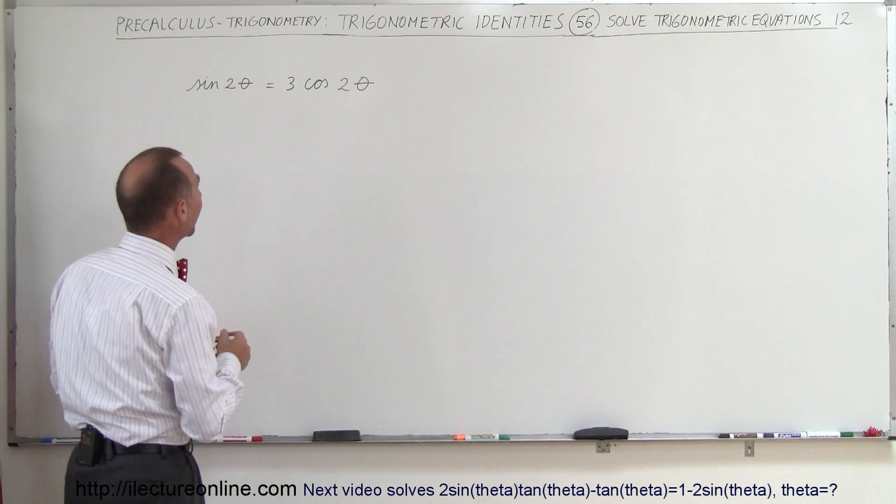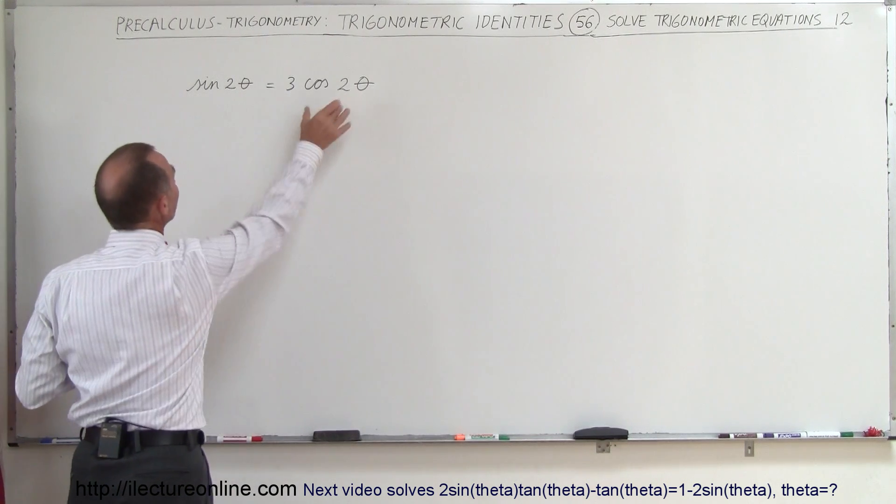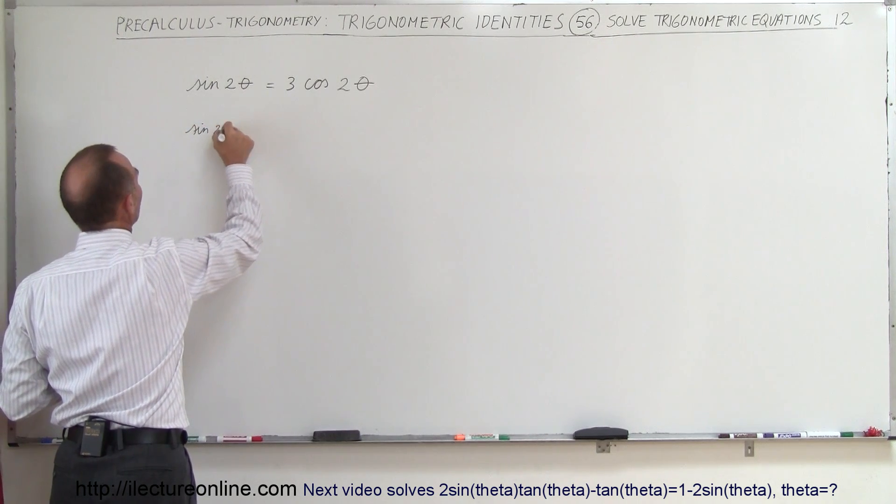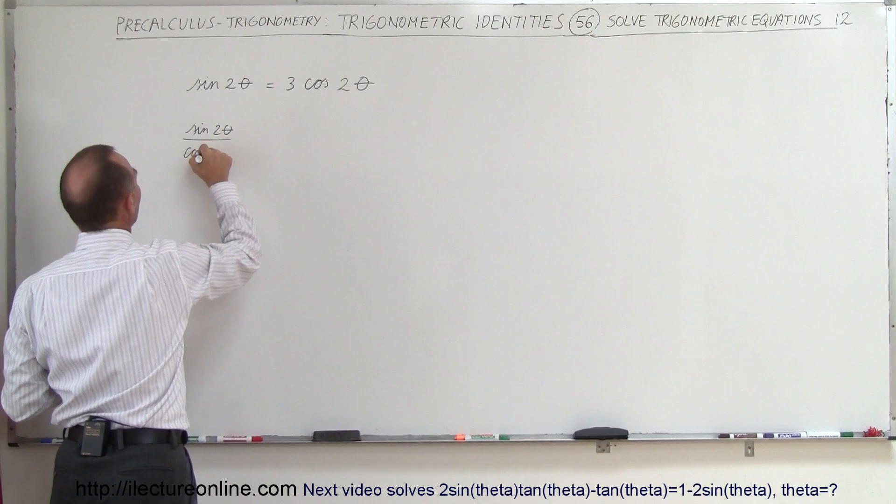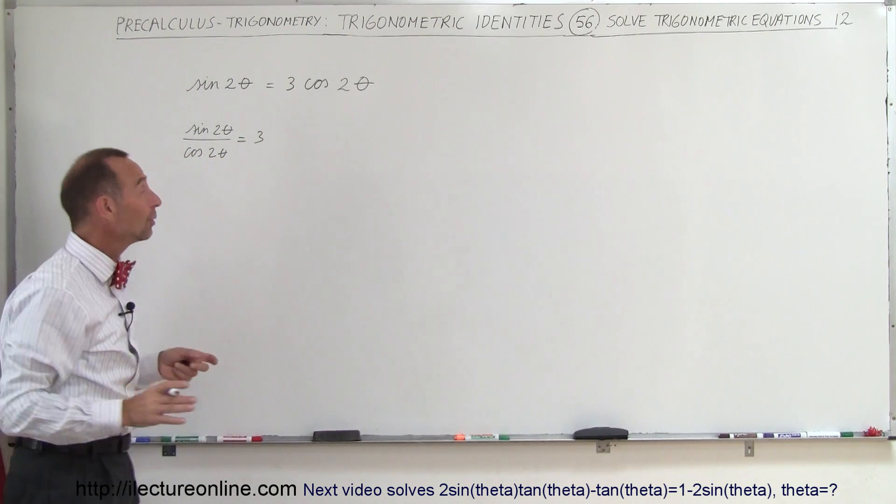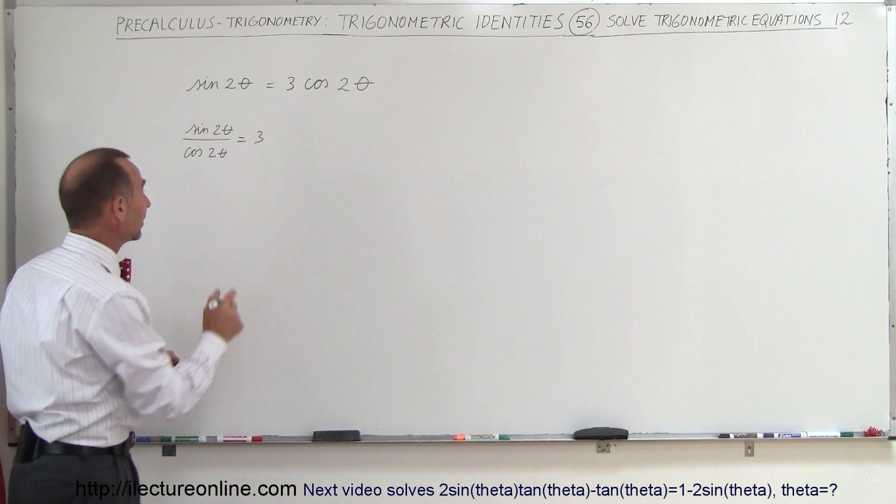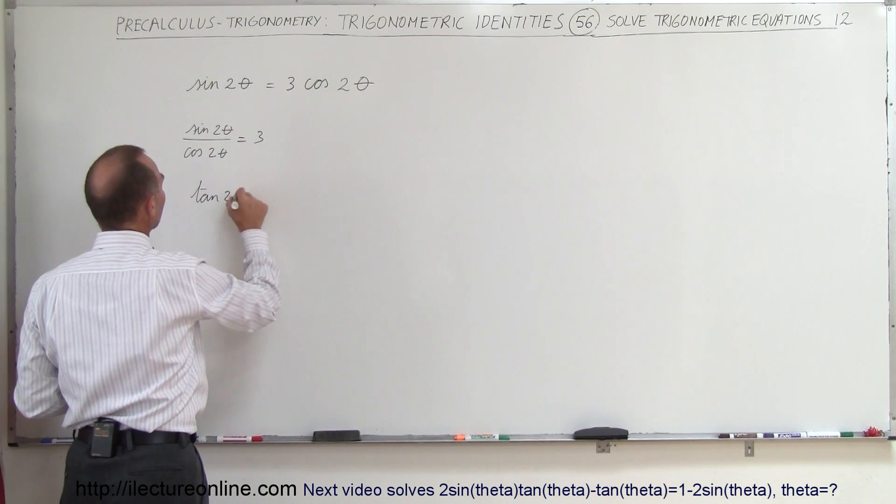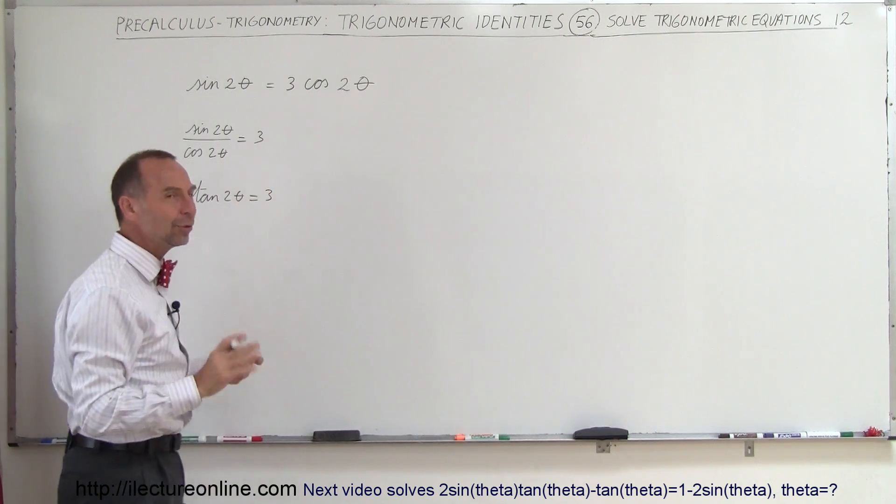What if you divide both sides by the cosine of 2θ? Move this over here and you end up with the sine of 2θ divided by the cosine of 2θ equals 3. And now what we can do is turn that into the tangent of 2θ. So the tangent of 2θ is equal to 3, and then we do that substitution.